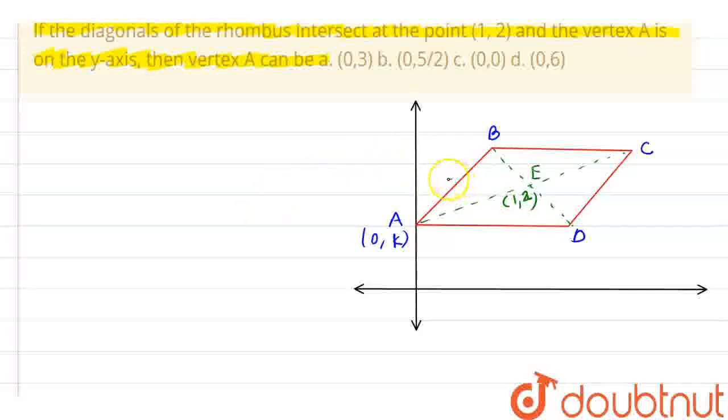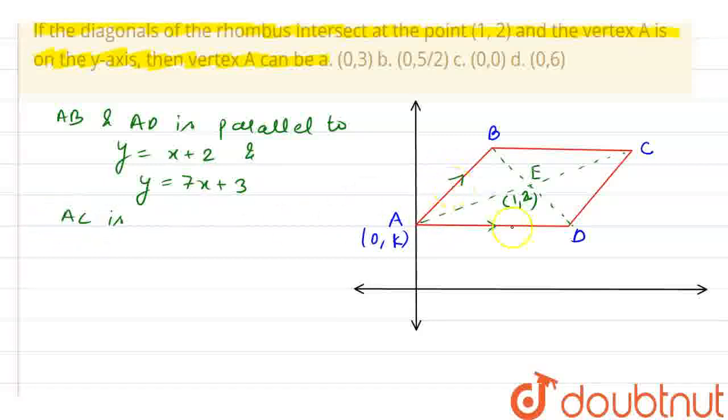Now, we know that AB and AD is parallel to y equals x plus 2 and y equals 7x plus 3. Now, AC is parallel to, if these sides are parallel to a line, then we can say that AC is parallel to